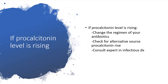If the value is not declining or it is rising, then we continue with our antibiotics. If it starts declining, then we now know that we have a good response to the medications we have administered. If the level of procalcitonin is rising, then we have to change the regimen. We also have to check for alternative sources of procalcitonin rise. If we change the regimen yet the level is still rising, we go back to the drawing board — start all over with the septic workup, obtain blood culture if possible, and consult an expert in infectious disease.